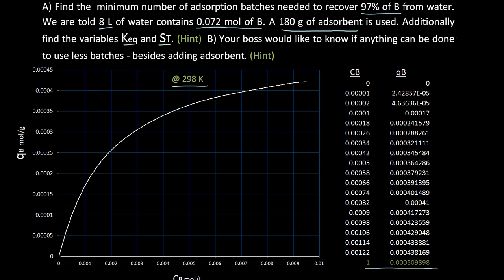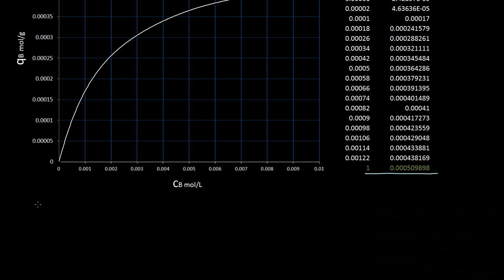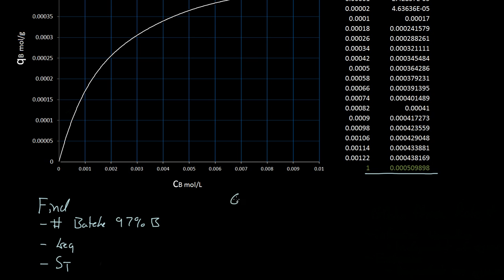Before we start, let's write down what we know. We need to find the number of batches to get 97% of B out. We also need to find KEQ and ST. ST is the total number of sites per gram, and KEQ is the equilibrium constant. We are given Q, the volume of water, which is 8 liters, and S, the amount of adsorbent, which is 180 grams.